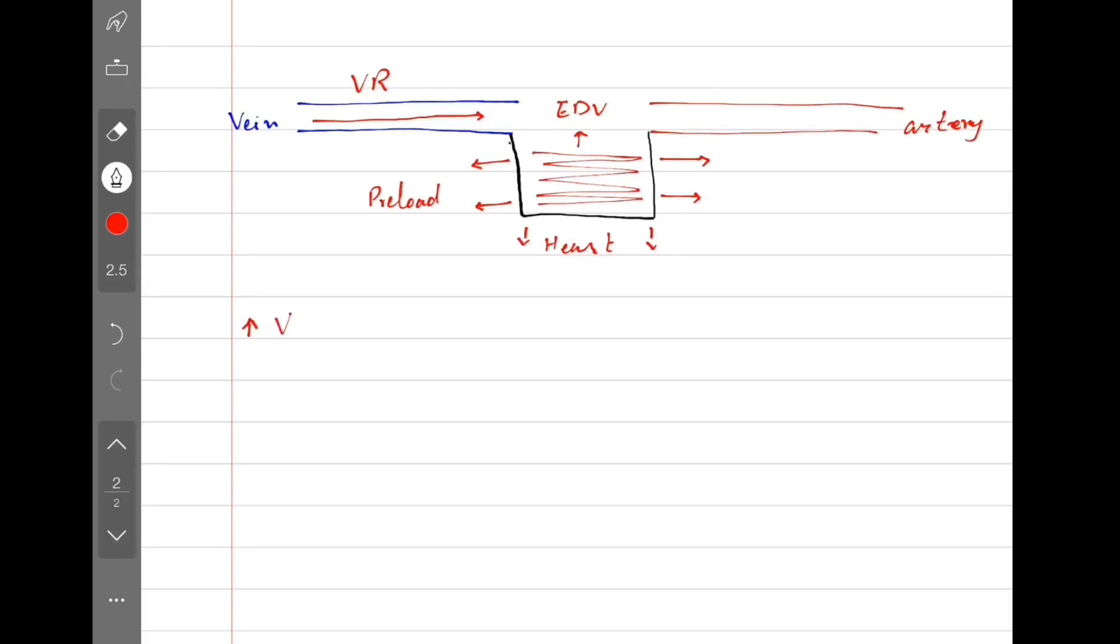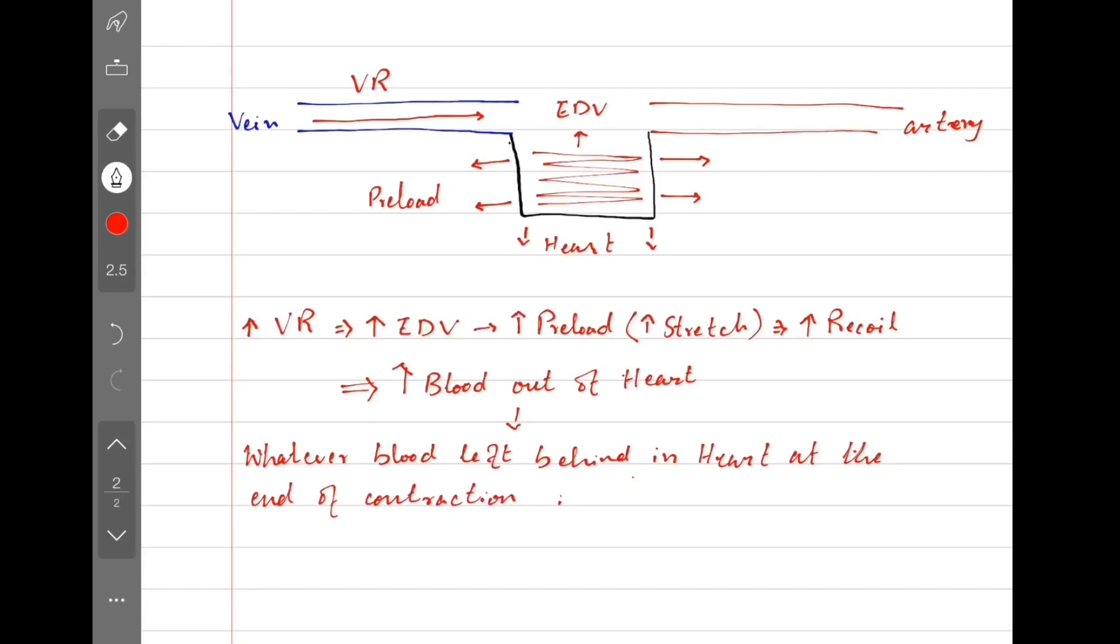Let's say we somehow increase the venous return. It will result in an increased end-diastolic volume which will stretch the heart out more. As a reaction, the cardiac muscle will recoil back or contract with more force as per Starling forces. And we will have more blood coming out of the heart. Once the heart has stopped contracting, there will be a little blood left behind which is called the end-systolic volume.